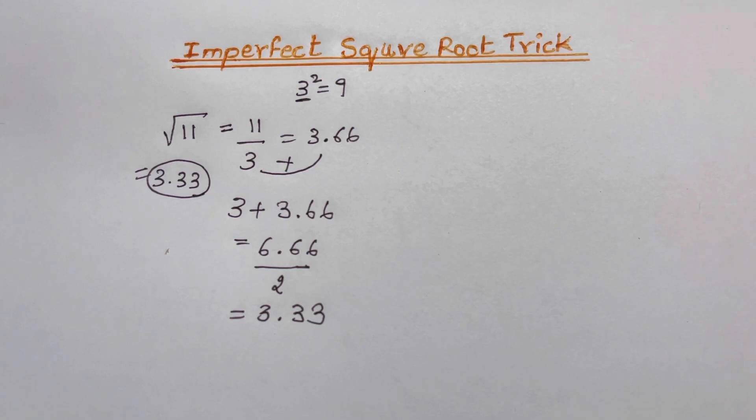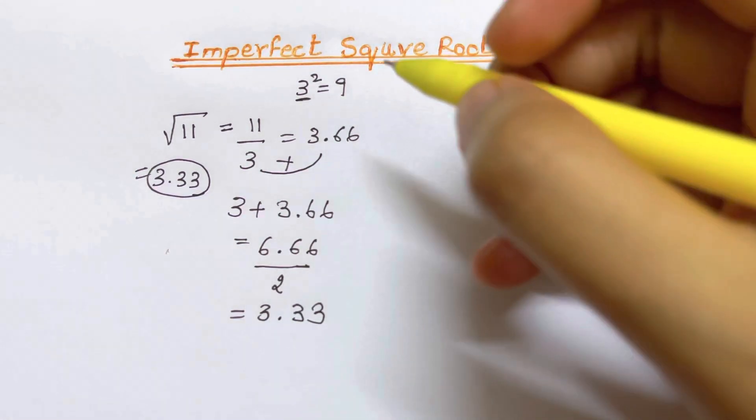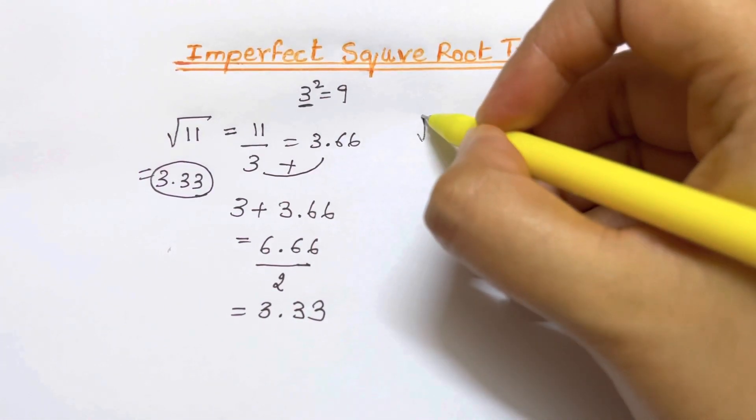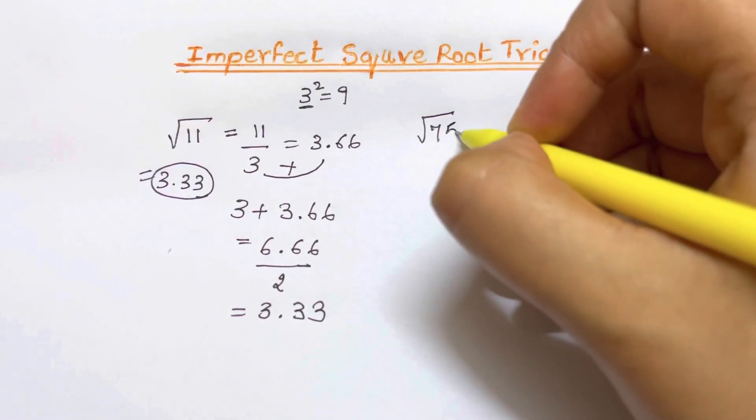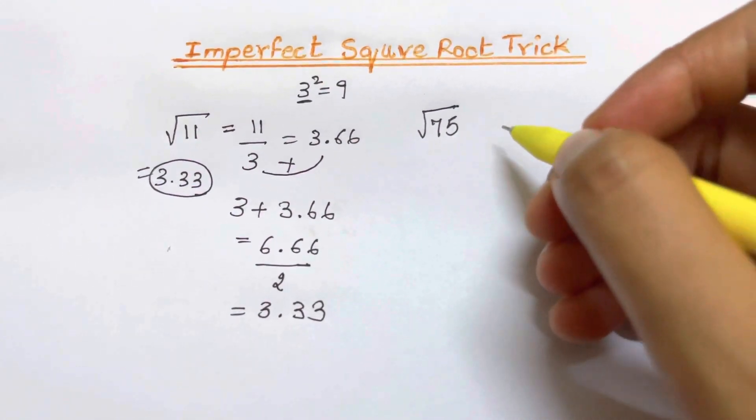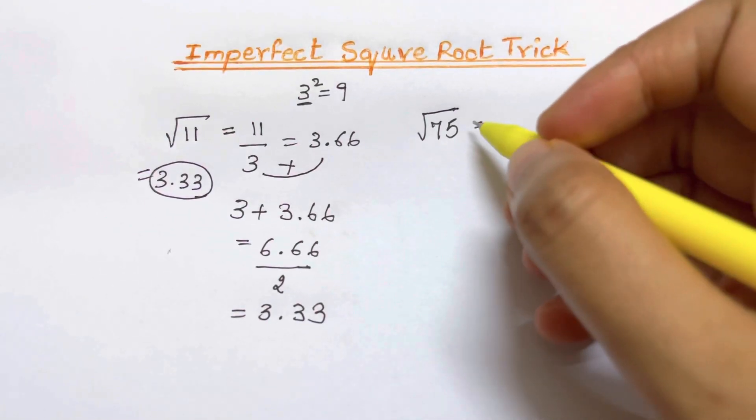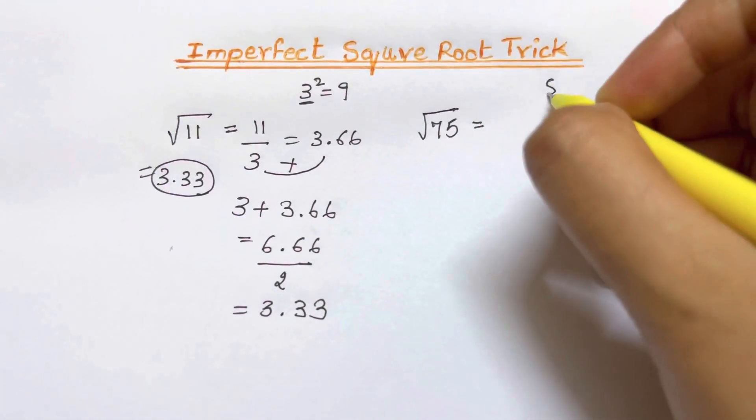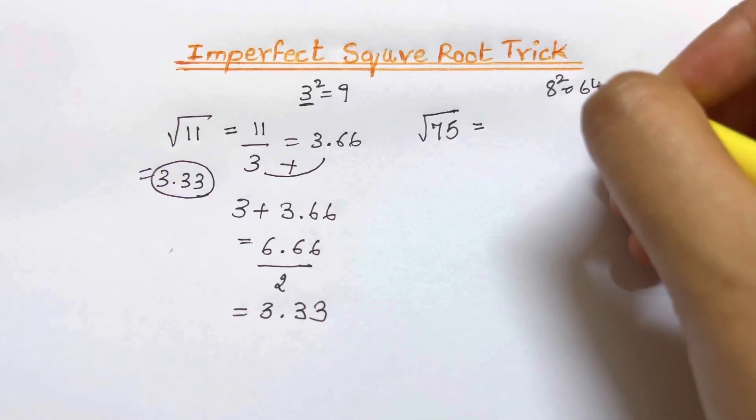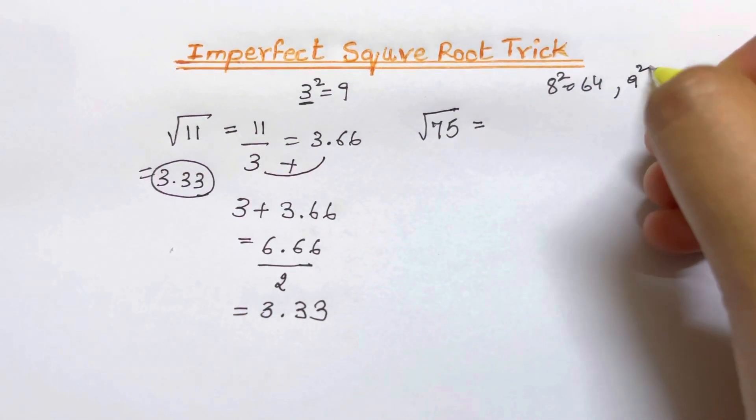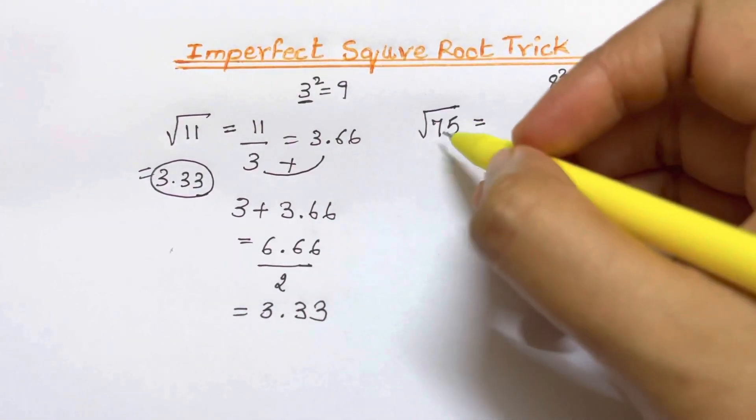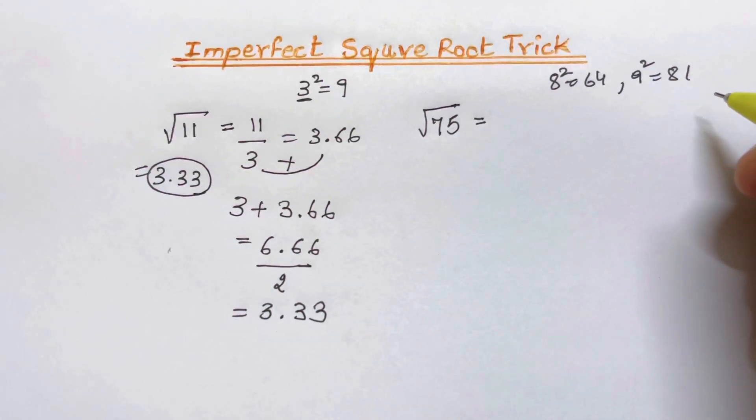Now let's check with another example. Suppose you have square root of 75. Now what is the nearest square number to 75? You have two numbers that's 8 square is equal to 64 and 9 square is equal to 81. 75 lies in between these two numbers.